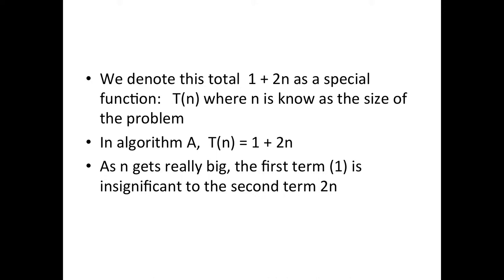Here, rather than timing it we're counting how many operations does it take as n becomes bigger. And we have a formula for that - we develop this 1 plus 2n. So in Algorithm A, T(n) is equal to 1 plus 2n.